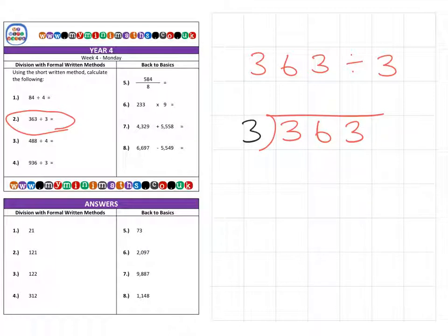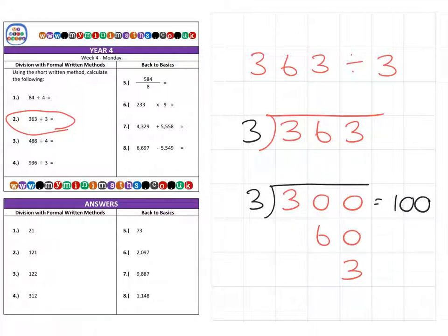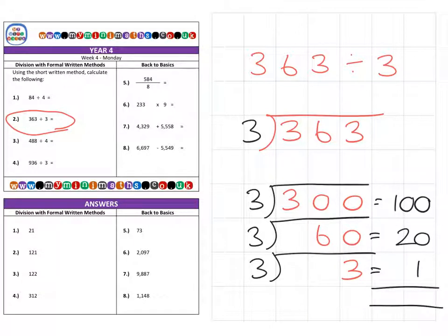We can split this number into hundreds (300), tens (60), and units (3). How many threes fit into 300? That's 100. How many threes fit into 60? That's 20. How many threes fit into 3? That's 1. We can total how many threes fit into 363 altogether, which is 121.